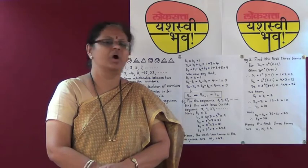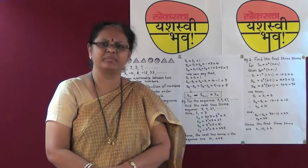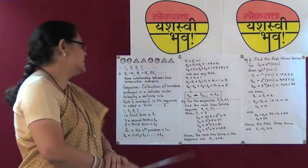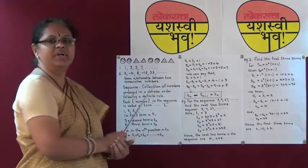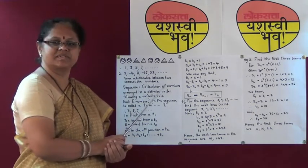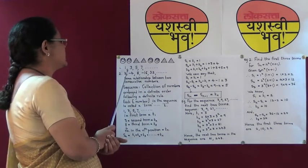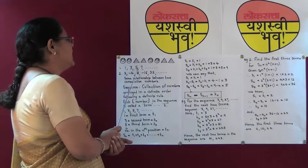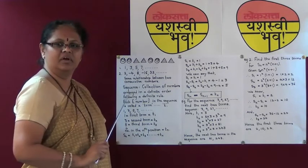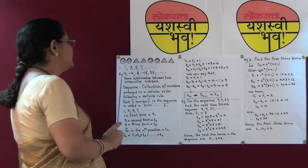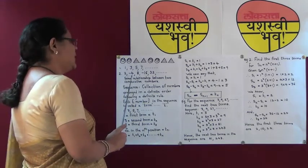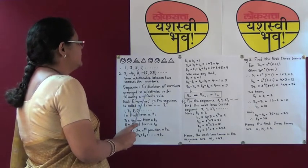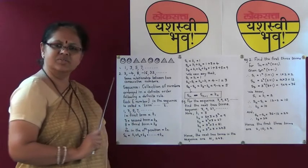In this session, I am going to explain what is an arithmetic progression. Children, consider this following arrangement of numbers. The first arrangement states 1, 3, 5, 7 and so on. The second arrangement is 2, minus 4, 8, minus 16, 32 and so on.